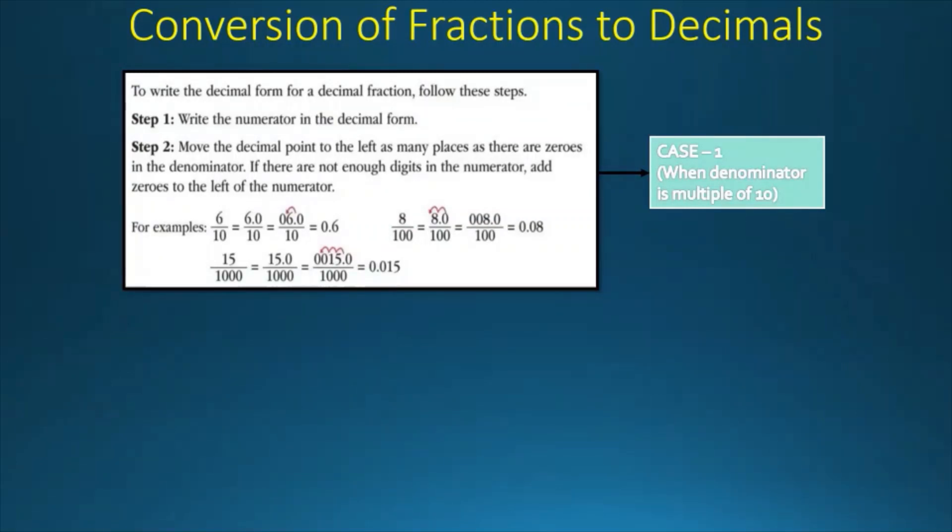For example, we have 6 by 10. So we will make it 6.0, and we will move the decimal to the left: 0.6. Now we can do the same thing for 8 by 100. 8 by 100 is equal to 8.0, and then we get 0.08. Now 15 by 1000. We will get 15.0, then 0.015 out of 1000, which is equal to 0.015.